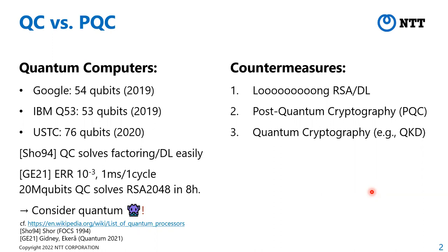According to Gidney and Ekerå's estimations, if the error rate is 0.1% and it runs at about one kilohertz, it can factor a 2048-bit RSA modulus using approximately 20 million physical qubits in eight hours. Thus, if an adversary has efficient, scalable quantum computers, current public-key cryptography will be broken.